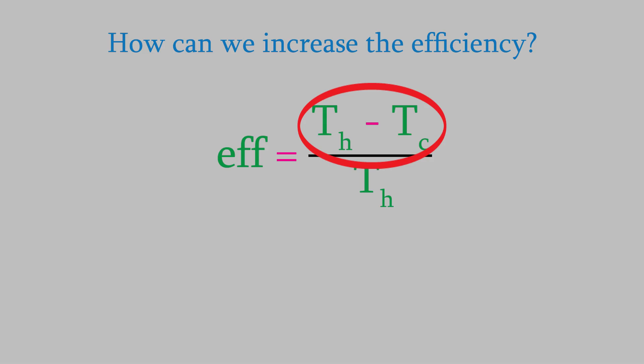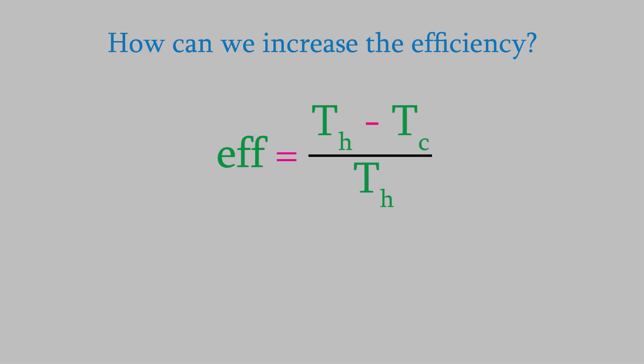So we could make the cold reservoir colder and the hot one hotter. The other possibility would be to reduce the denominator of the fraction, which would mean lowering the temperature of the hot reservoir. Raising the temperature of the hot reservoir raises the numerator and therefore increases the efficiency, and lowering the hot temperature lowers the denominator, which also increases the efficiency.